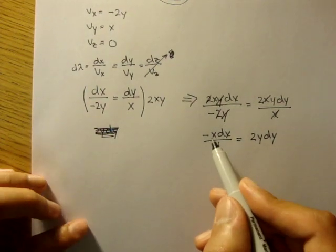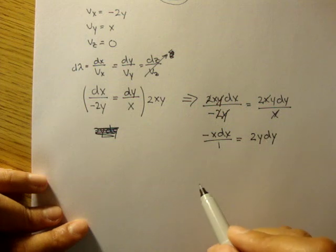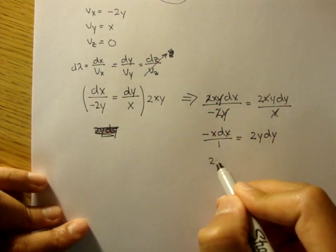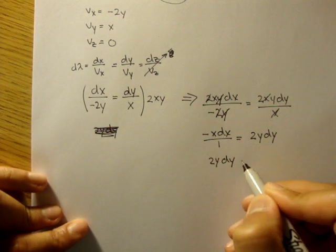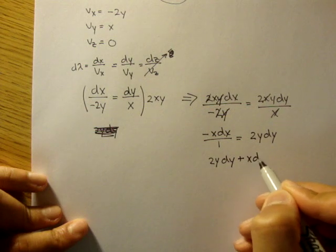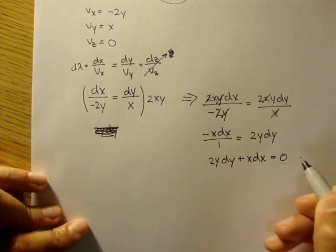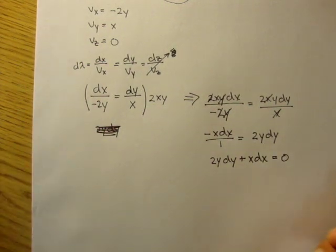Let's add negative x dx onto one side, so we'll get 2y dy plus x dx is equal to 0.